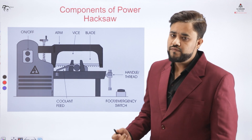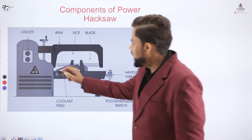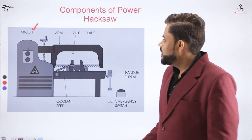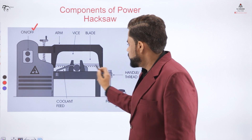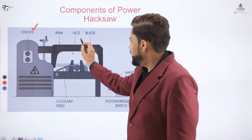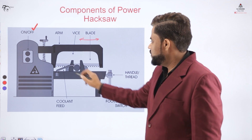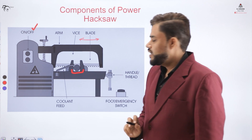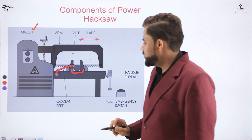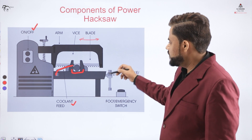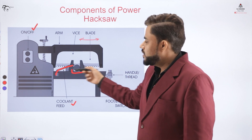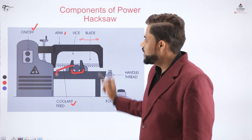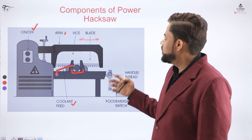Now let us come to the diagrammatic presentation of the power hex saw. It has an on/off button through which the internal mechanism is driven — I will come to the internal mechanism in a few minutes. That internal mechanism drives the hex saw blade, which moves in the forward and backward direction. In the forward direction there is cutting, and the material to be cut is placed in between the vise. The coolant is supplied with the help of a pipe called the coolant feed, and there is a handle used to move the table back and forth or up and down. There is also an arm on which the hex saw blade is attached.